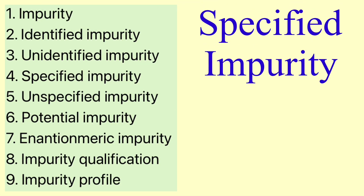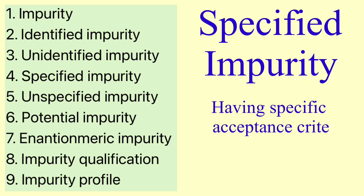Now comes specified impurity. Any impurity that has a specific acceptance criteria will be called a specified impurity. A specified impurity can be either identified or unidentified. To repeat: specified impurities are those for which there is a specific acceptance criteria.